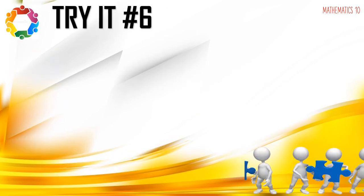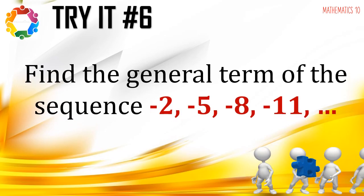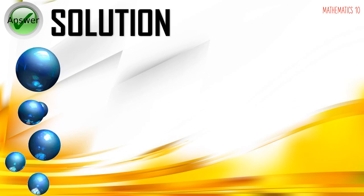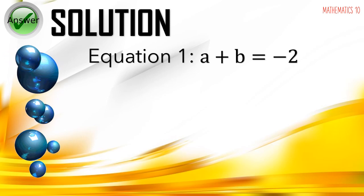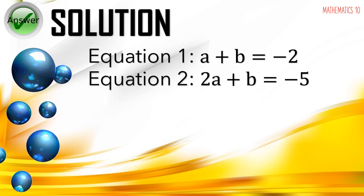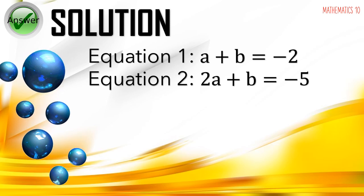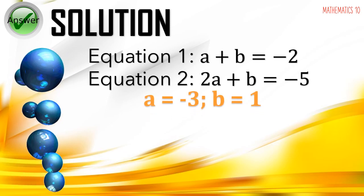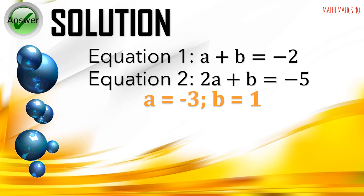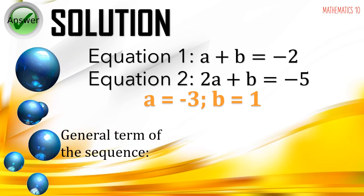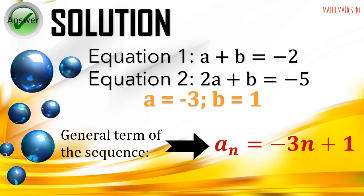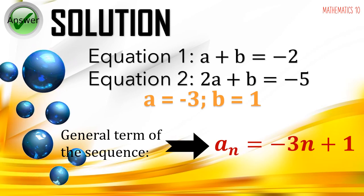One more example: find the general term of the sequence negative 2, negative 5, negative 8, negative 11. Equation 1 is a plus b equals negative 2, and equation 2 is 2a plus b equals negative 5. Applying the elimination method gives a equals negative 3 and b equals 1. Therefore, the general term of the sequence is a sub n equals negative 3n plus 1.